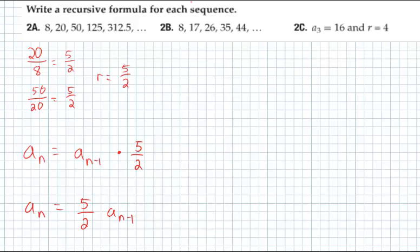In 2b, we are adding 9, adding 9, adding 9. So determining whether it's a common ratio or a common difference, in this case, since we're adding the same number every time, we know that D is 9. So coming up with our formula, it's going to be A sub n is the previous term plus 9. No big deal there.